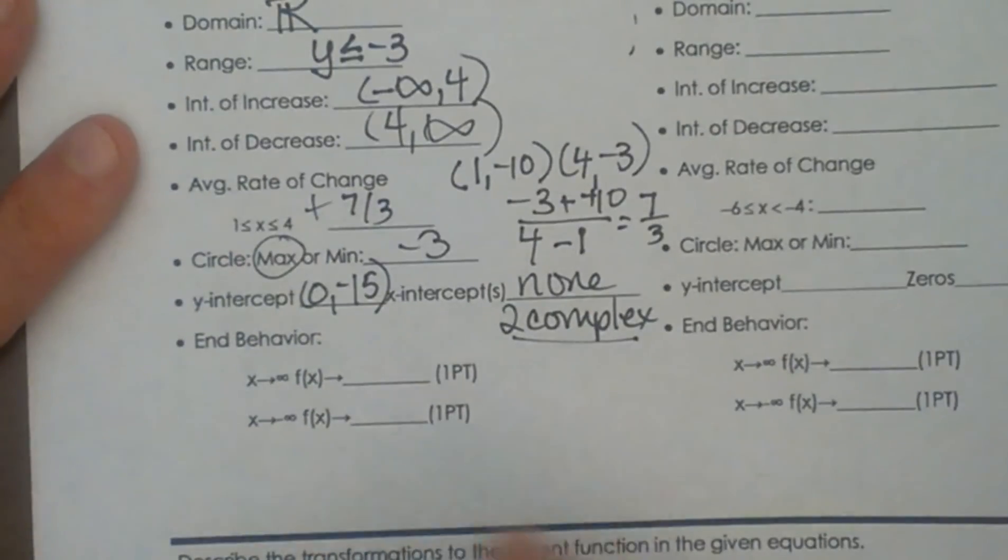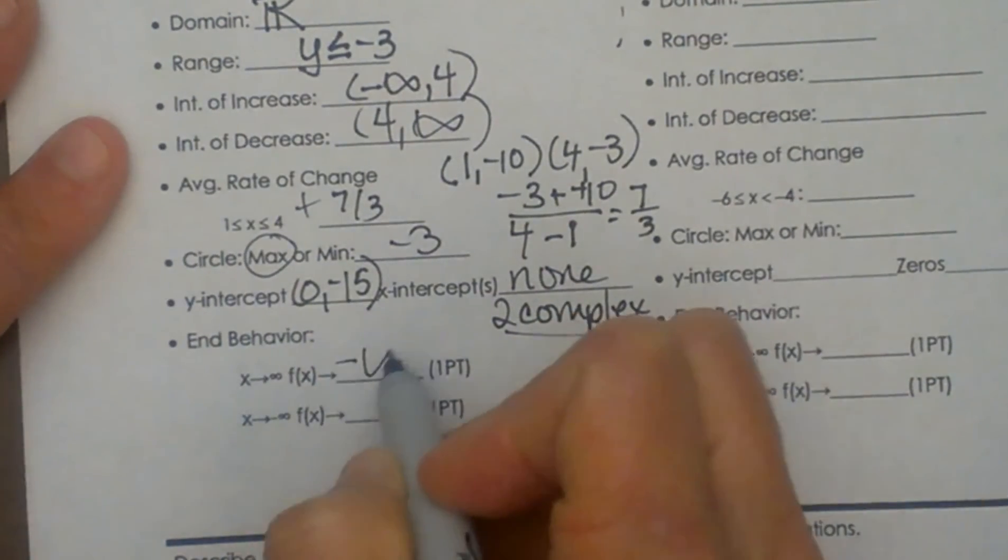The graph is going down. So we are going to say the graph goes to negative infinity because it never stops. It just keeps going.